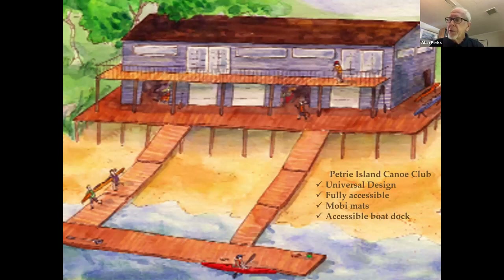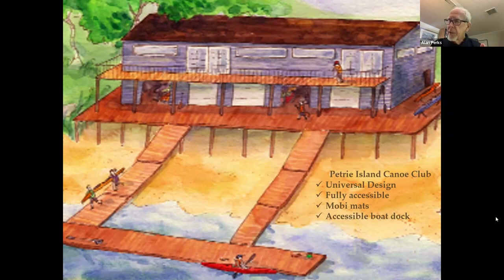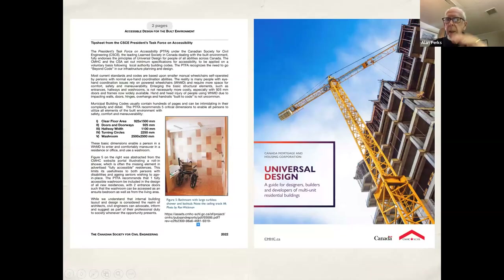Our group is helping the Petrie Island Canoe Club to get approval for universal design of their new club and boat storage facility on Petrie Island in Ottawa. There were questions raised by the city about mobi mats and an accessible boat dock, and we are helping them bring together enough information to move that forward. So that's another community effort we're involved in.